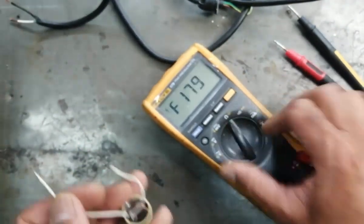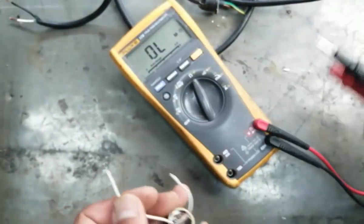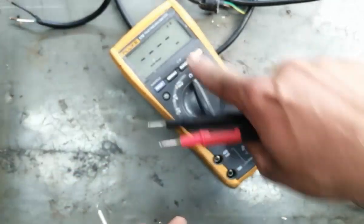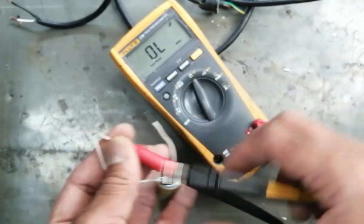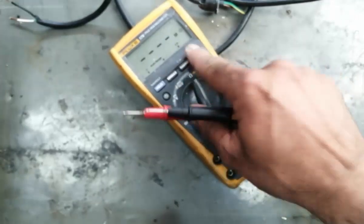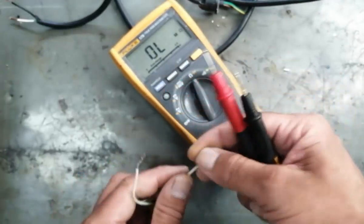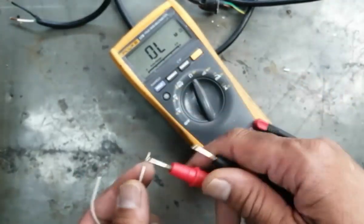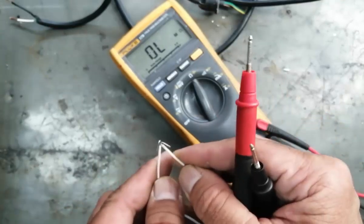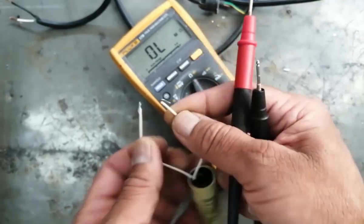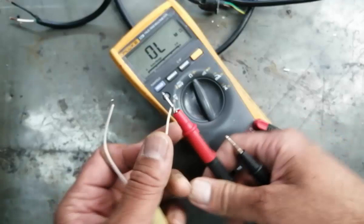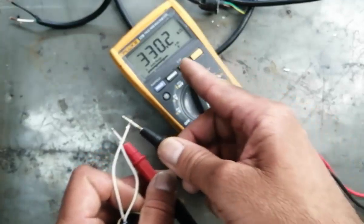That's working. If you have an ohmic range, first short both leads, then connect one lead here and the second lead here. It will read, and then the resistance will increase.